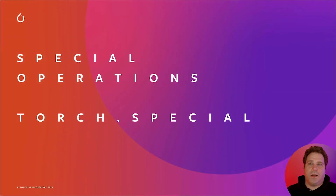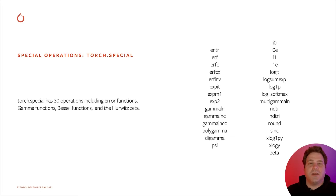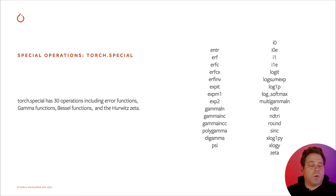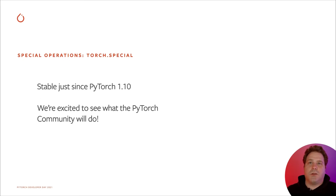The last module I'll highlight is the new Torch.Special module, modeled after SciPy's special module. It has a variety of functions principally intended to facilitate work in statistical physics. Here's a list of the 30 operations that Torch.Special shipped with in PyTorch 1.10. It includes Bessel functions, error functions, gamma functions, and the Hurwitz zeta, in addition to other functions for statistical physics and working with distributions. Torch.Special just went stable in the PyTorch 1.10 release, and we're excited to see what the community does with it.